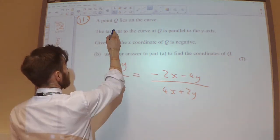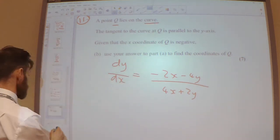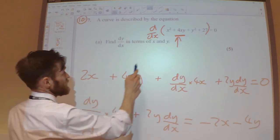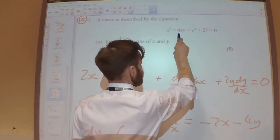So we're told that a point Q lies on the curve. Well that means that it's going to obey this equation that we had right at the very beginning, so it's going to obey that rule.